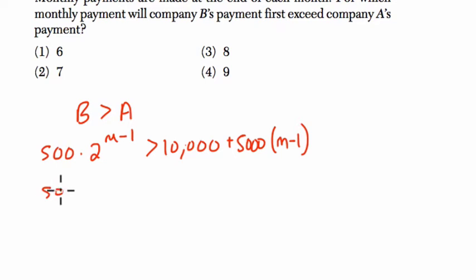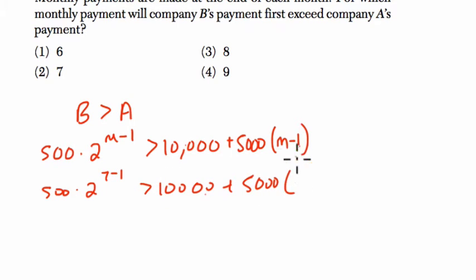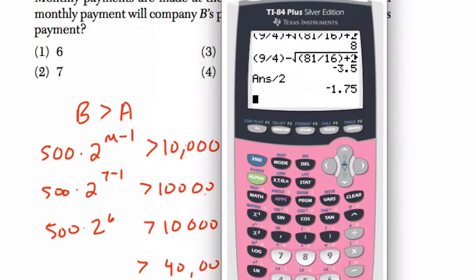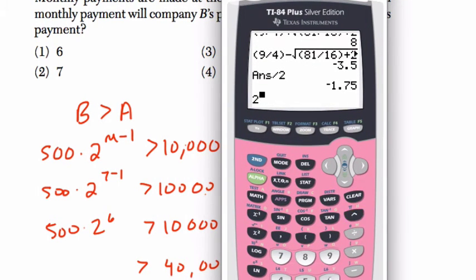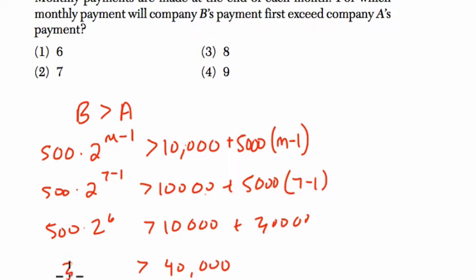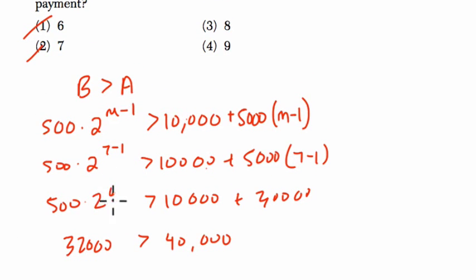I'm going to use our answer choices and start with 7 to see what happens. So we get 500 times 2 to the (7 minus 1). Is that greater than 10,000 plus 5,000 times 6, or 30,000? So is it greater than 40,000? We find 2 to the 6th using the exponent button, then times 500, and we get 32,000. So it's not greater yet — we've got to move higher. 6 is obviously not going to work either since we need the exponent as large as possible.